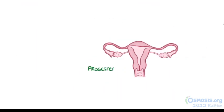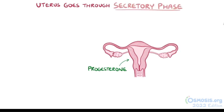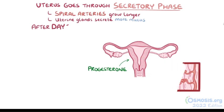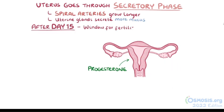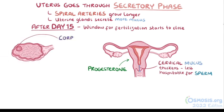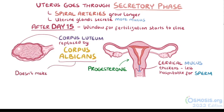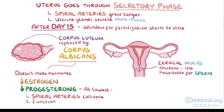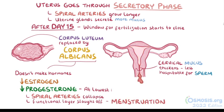Under the influence of progesterone, the uterus enters into the secretory phase of the endometrial cycle. During this time, spiral arteries grow the most and become coiled, and the uterine glands begin to secrete more mucus. After day 15 of the cycle, the optimal window for fertilization begins to close, and the cervical mucus starts to thicken and becomes less hospitable to sperm. Over time, the corpus luteum gradually degenerates into the non-functional corpus albicans, which doesn't make hormones, so estrogen and progesterone levels slowly decrease. When progesterone reaches its lowest level, the spiral arteries collapse, and the functional layer of the endometrium prepares to shed through menstruation, marking the beginning of a new menstrual cycle.